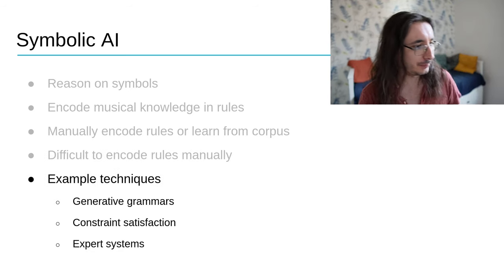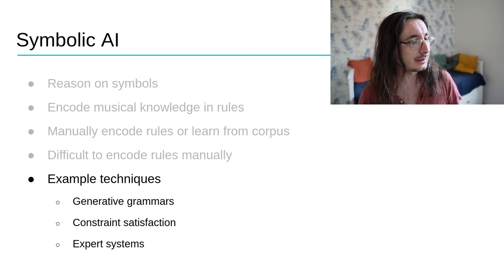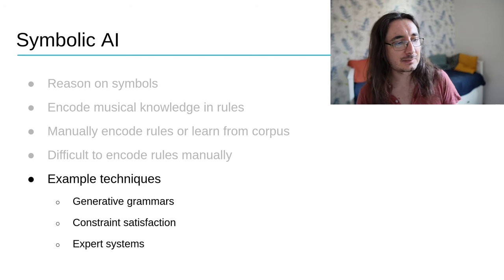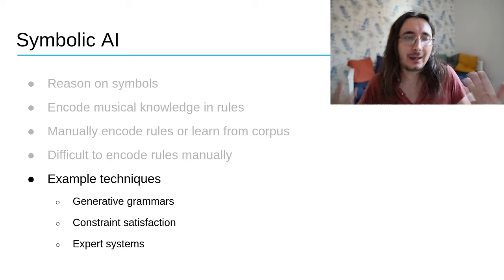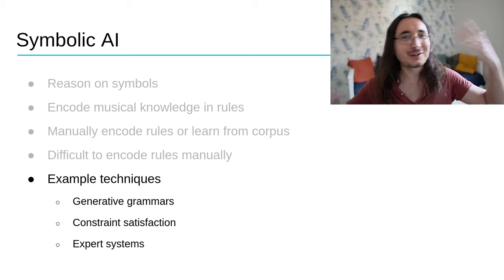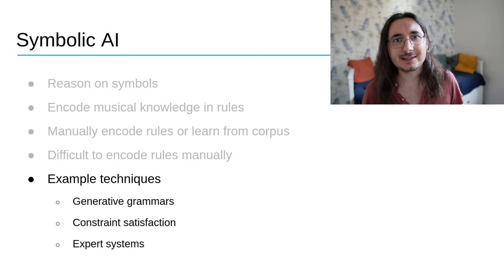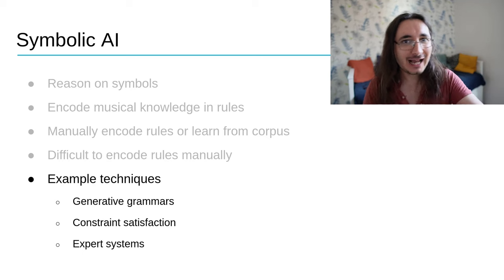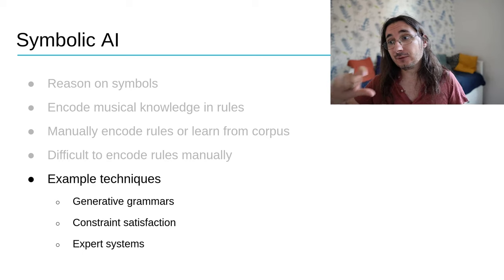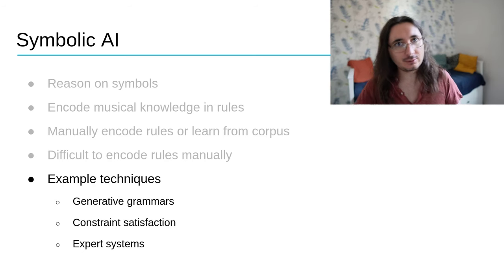Example techniques include generative grammars — which we'll dive into deeply in part two of this course — then constraint satisfaction and expert systems. In constraint satisfaction, you have a bunch of rules as constraints and you want to create a solution, in our case a piece of music, that satisfies all of them. In an expert system, you have a knowledge base of rules for a particular compositional task and a logic engine for reasoning on those rules to create a solution.